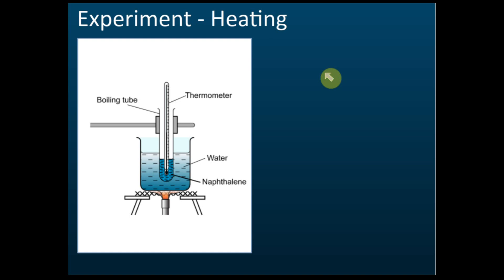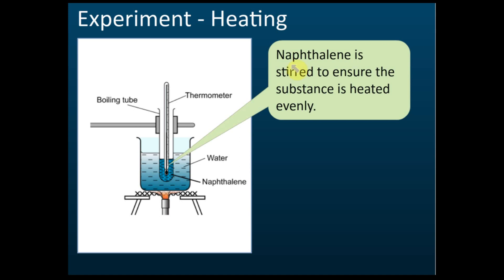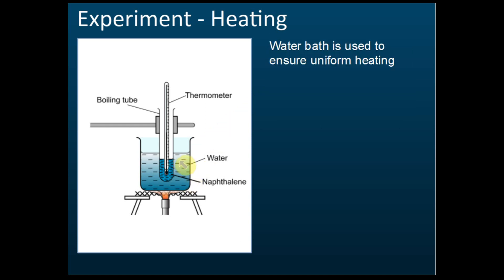The next thing you need to know is the heating experiments and cooling experiments, and the heating curve and cooling curve. From this diagram we can see that we heat naphthalene with water. This technique is called the water bath. The first thing to know is that naphthalene is stirred to ensure the substance is heated evenly.